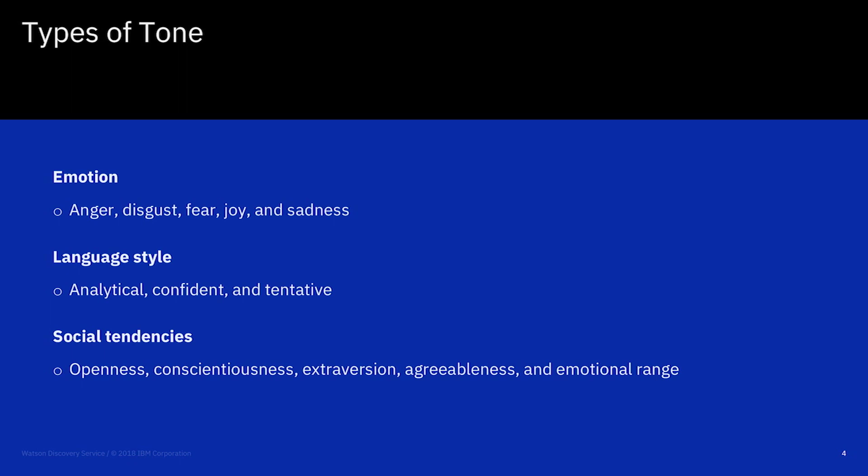Lastly, and perhaps most intriguingly, Tone Analyzer returns how the author is likely to be perceived. This social tendency analysis will return a common set of personality descriptors known as the Big Five personality traits, namely openness, conscientiousness, extraversion, agreeableness, and emotional range.